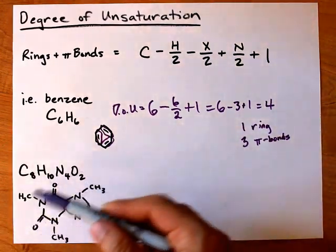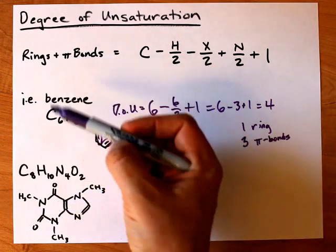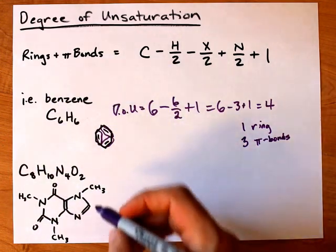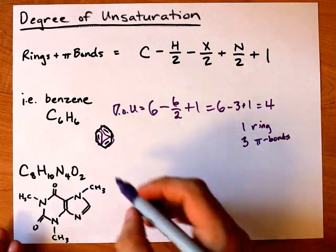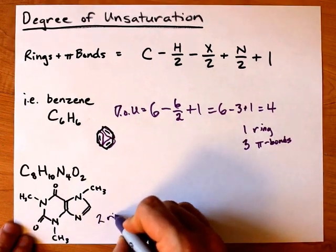Here, let's count up the number of rings and pi bonds first and convince ourselves that we're going to get the right answer. Let's count the rings: one, two. Well, that was easy. Two rings.